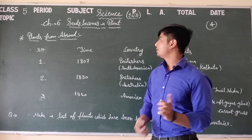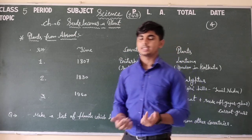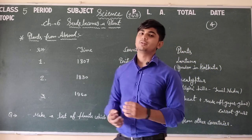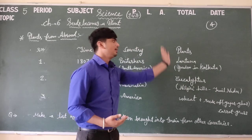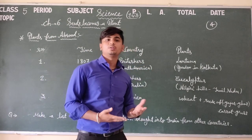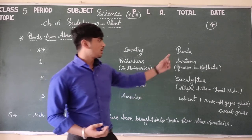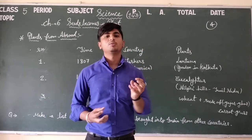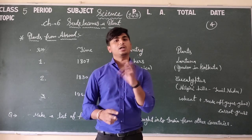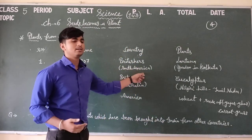First, we will talk about the Britishers who came to India in 1807. They brought the Lantana flower, which is basically from South America. This flower was planted in a garden in Kolkata. It is a small cluster of flowers with dual colors — a combination of pink, red, white, or orange. So it was a different kind of flower which the Britishers brought from South America to Kolkata.